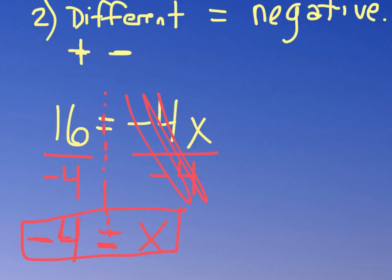And again, we can double check. If I replace x up here with a negative 4, our equation would be negative 4 times negative 4, which is indeed positive 16. So, we know we've got the right answer.